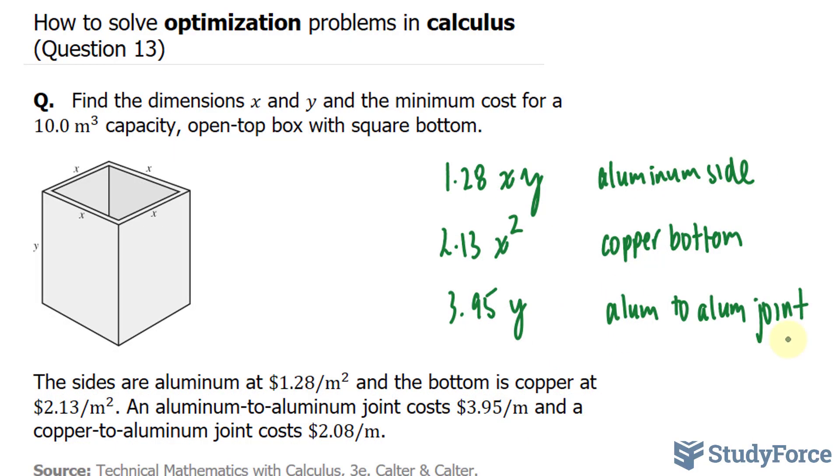And the last cost they mention is the copper to aluminum joint which is $2.08. The only time that the aluminum and the copper touch is at the bottom, so we'll represent that as $2.08 times x.